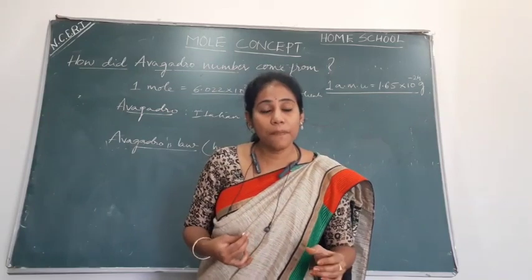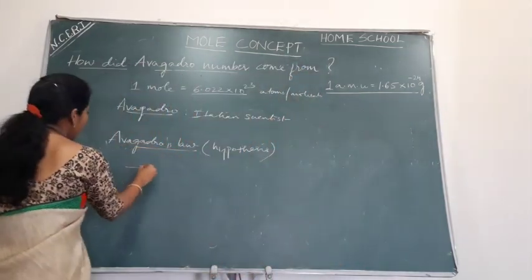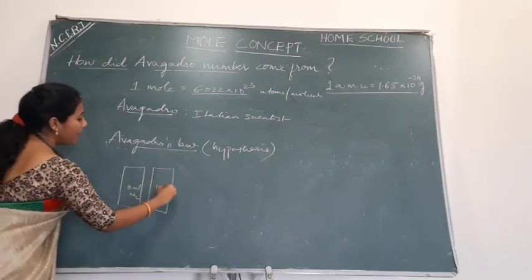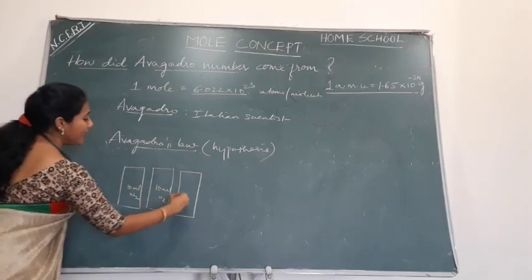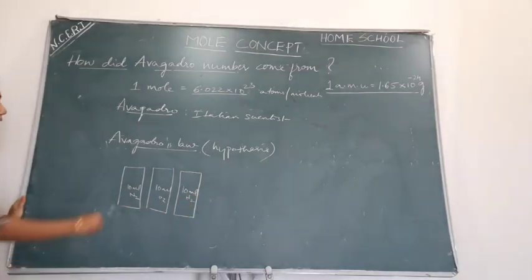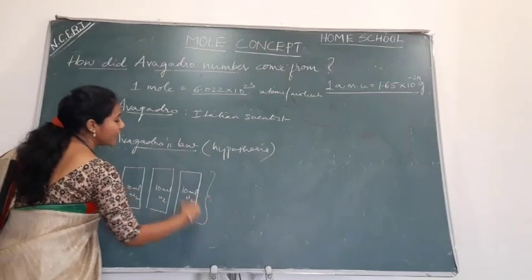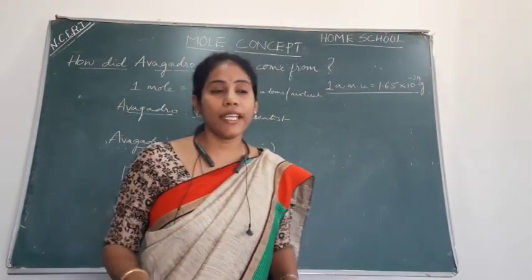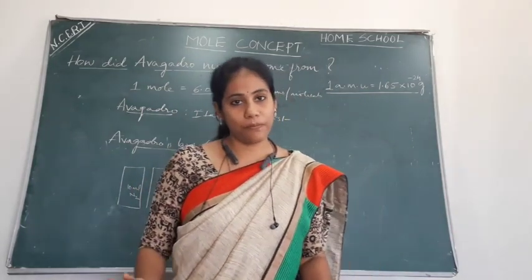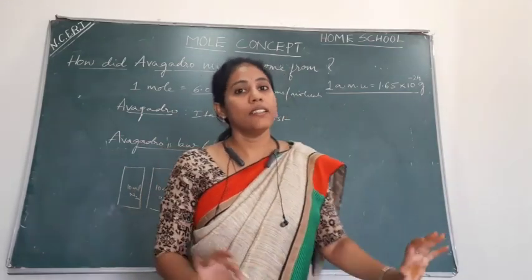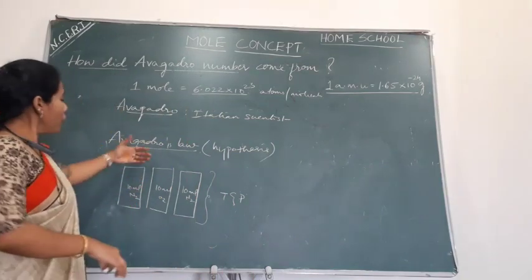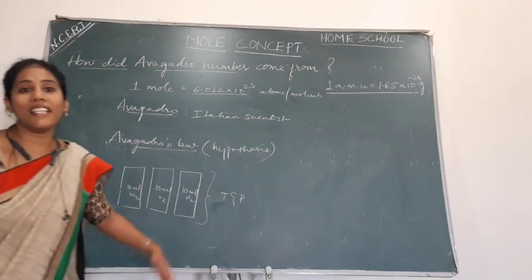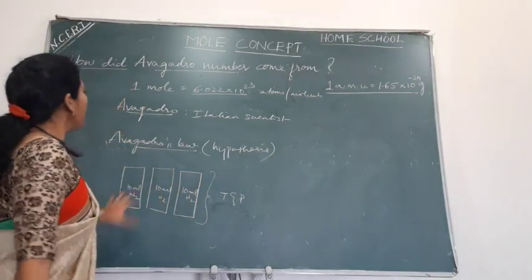Listen carefully to the definition. Equal volumes of gases — say for example in one container I take 10 ml of nitrogen gas, another container 10 ml of oxygen gas, and another container 10 ml of hydrogen gas. I took equal volumes and maintained the containers at the same temperature and pressure — at STP conditions, 273 Kelvin and 1 bar. At constant temperature and pressure, all three will have the same number of molecules. This is what we call Avogadro's hypothesis.